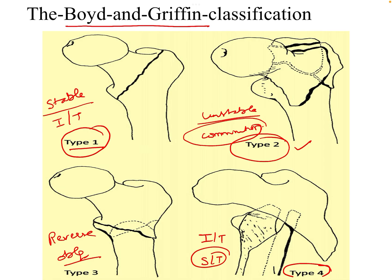In type 4, the fracture lines are in two different planes — they can be in the coronal and the sagittal planes. This completes the Boyd and Griffin classification.